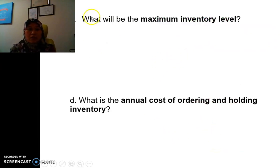We go to the next question, they ask us, what will be the maximum inventory level? So these are the formula for IMAX, in which Q, we calculated earlier, P, the production rate, and U, the usage rate.